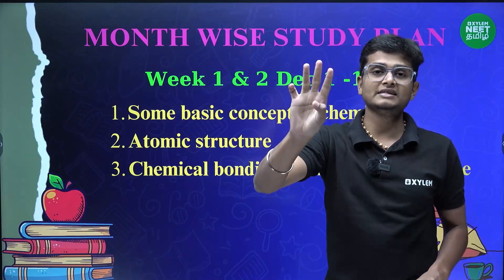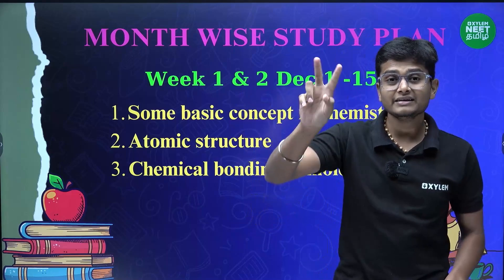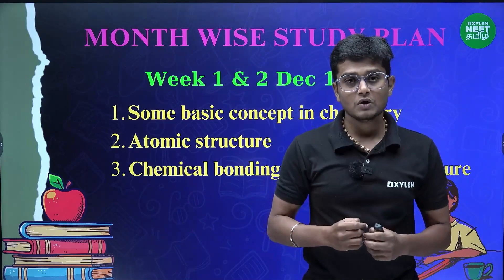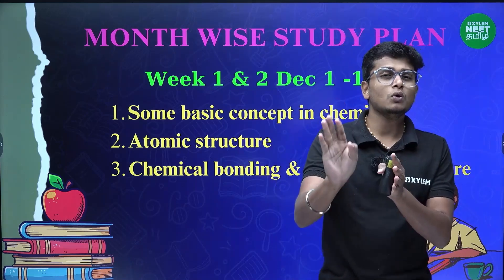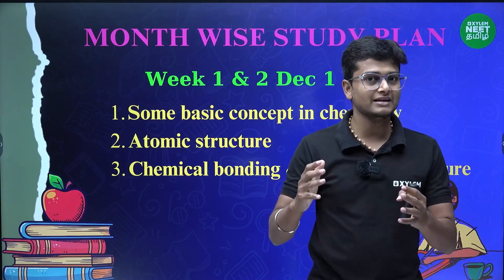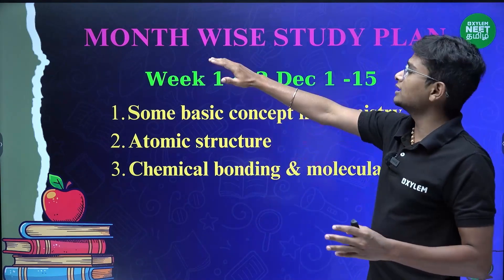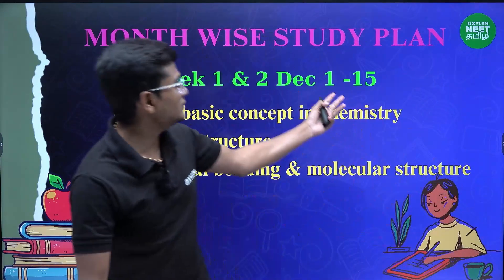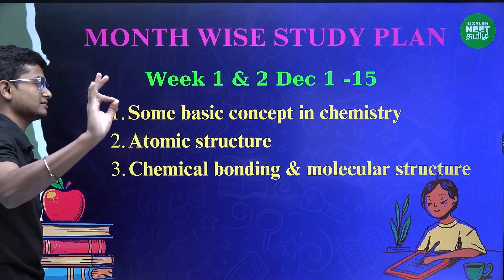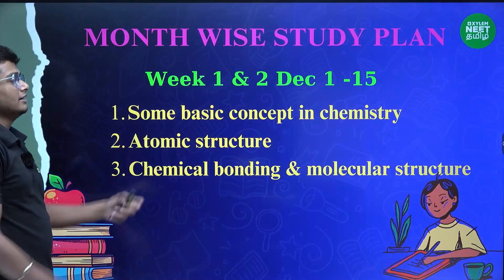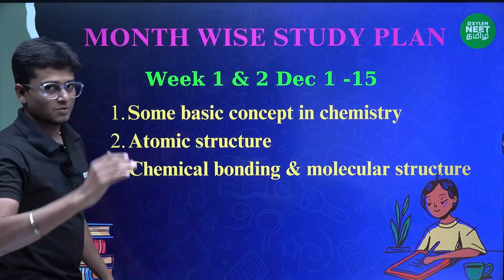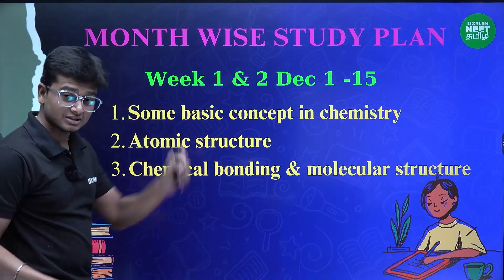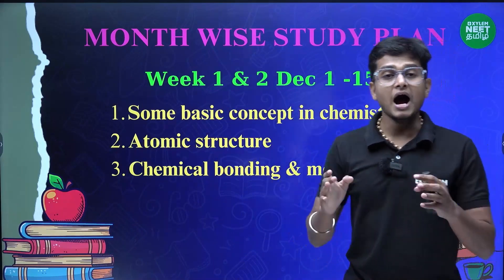So the plan is two or three chapters per week. Week one and two of December: some basic concepts of chemistry (plus one), and chemical bonding and molecular structure — that's three chapters you can cover in those two weeks.